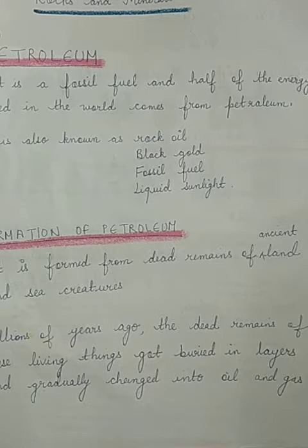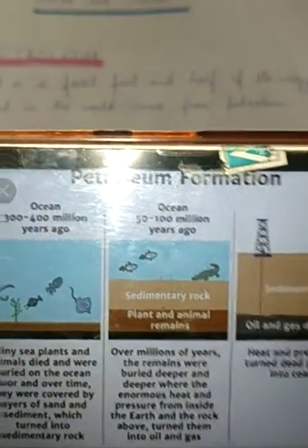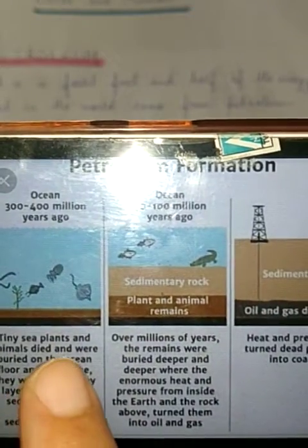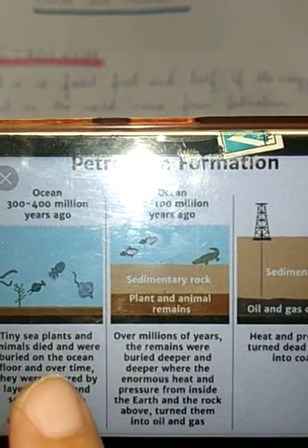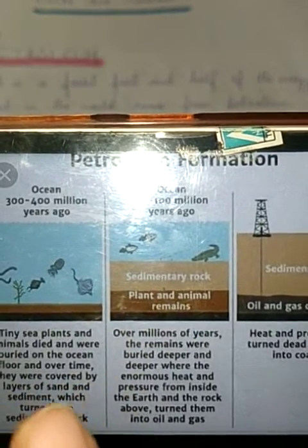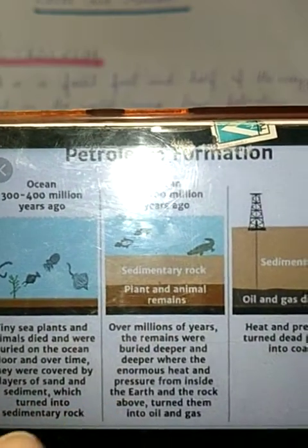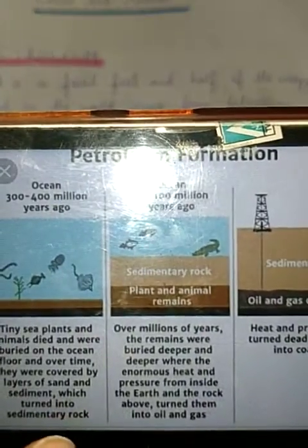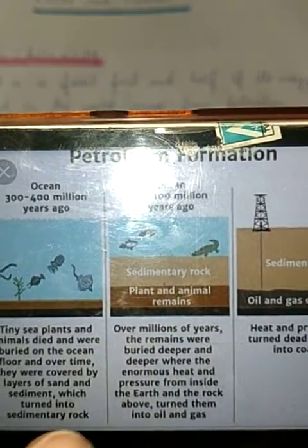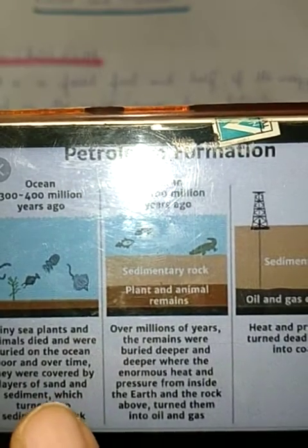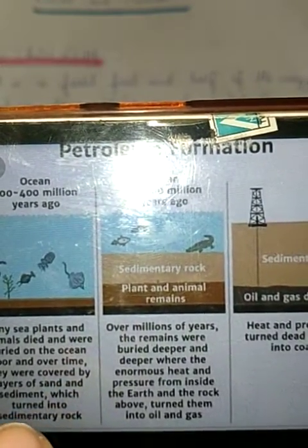This you can see with the help of this diagram. What is shown here: around 300 to 400 million years ago, tiny sea plants and animals died and were buried on the ocean floor. Over time they were covered by layers of sand and sediment, which turned into sedimentary rock.